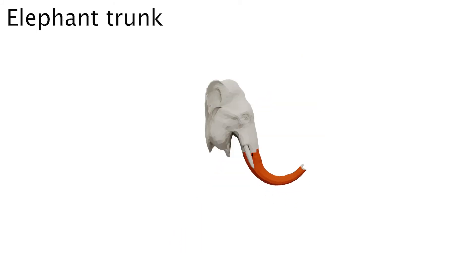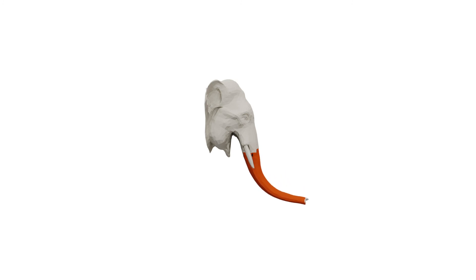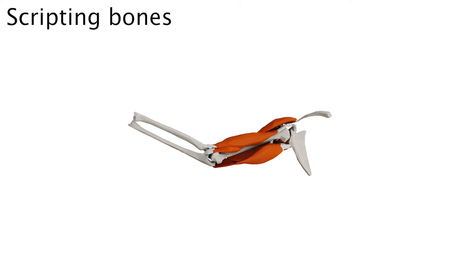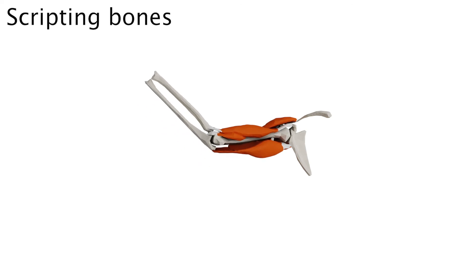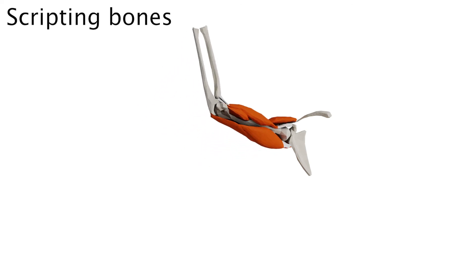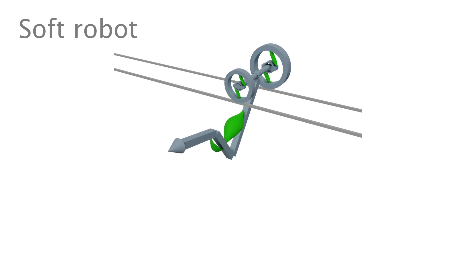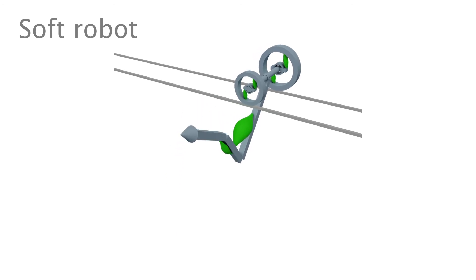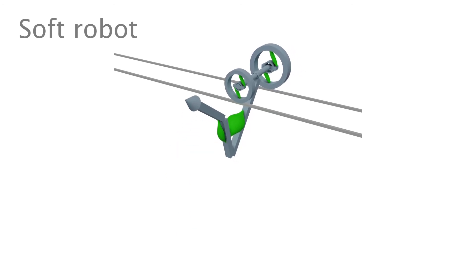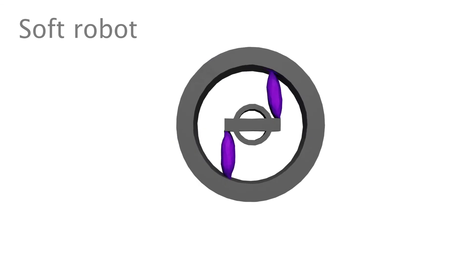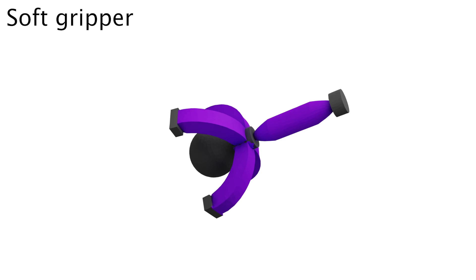This elephant trunk is a boneless muscle. In addition to muscle-activated motion, EMU also allows users to script the position of the bones for custom deformations. Lastly, our method can also be used for non-anatomical geometries, such as a soft mechanism as well as a soft gripper.